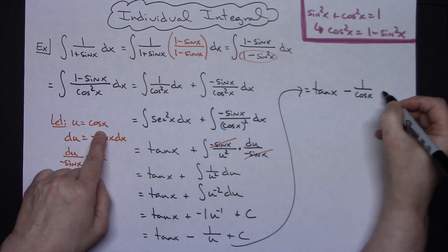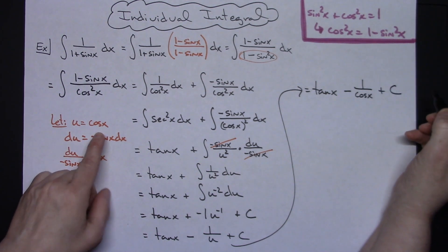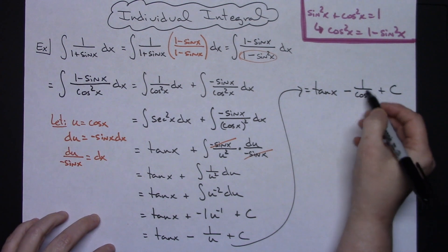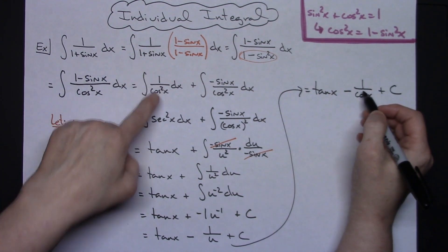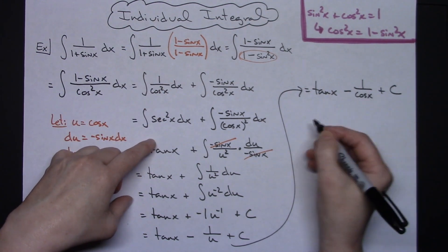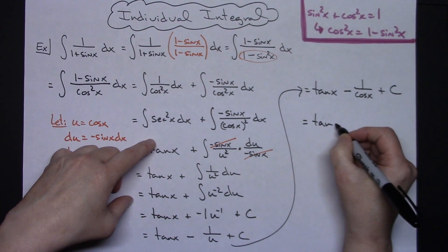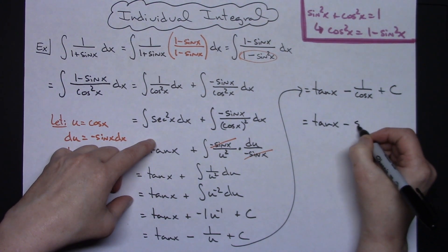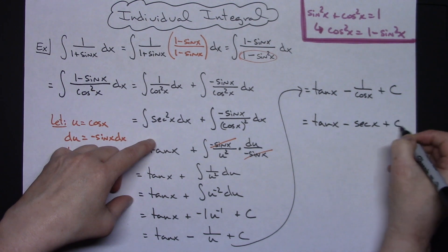All right and then minus replacing that u with what we said it was going to be 1 over cosine x plus c. And then one more substitution here this is the reciprocal identity same thing we did here except it's just not squared so then we'll have a tangent x minus a secant x and then plus the c.